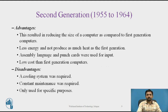Advantages of second generation computers include reduced size compared to the first generation, less energy consumption, and less heat produced. Assembly language and punch cards were used for input. Disadvantages include the requirement for a cooling system, the need for consistent maintenance, and use only for specific purposes.